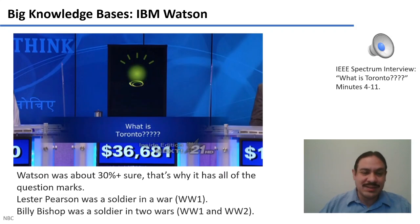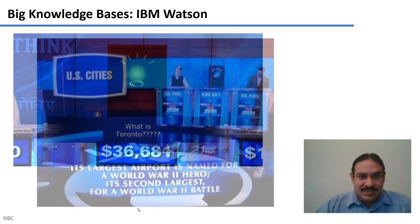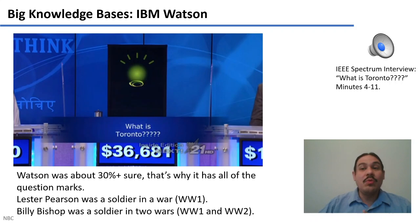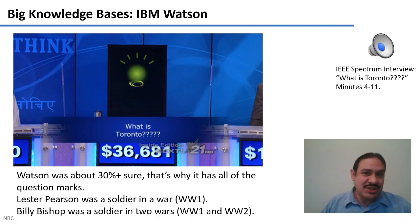This was from 2011. Watson was not very sure — that's why it had all those question marks. The facts it used were probably that there is an airport in Toronto (Pearson Airport), that Lester Pearson was a soldier in some war, and that Bishop was a soldier in two wars. So there were facts that related Toronto to the question, even though the answer required a US city. Over time, Watson went back to Jeopardy, won, because it had compiled billions of facts about the world and has a very efficient inference engine behind it.